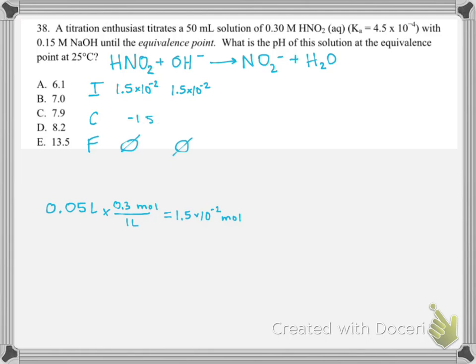We didn't start with any conjugate base, but now we're going to make 1.5×10⁻² moles of it. Eventually we'll need to take that conjugate base and use it in an ICE table, but to do that we'll need its concentration, so we need to figure out the total volume.